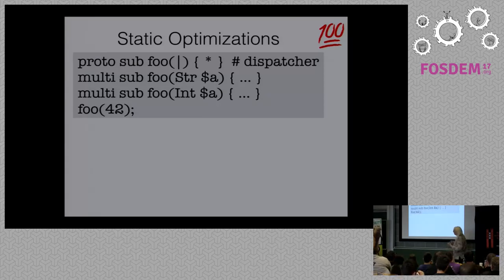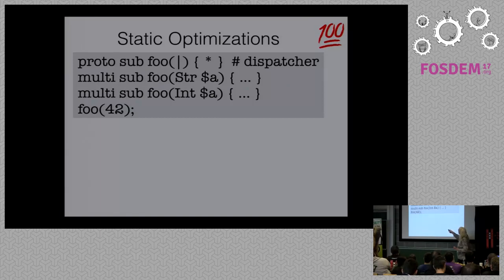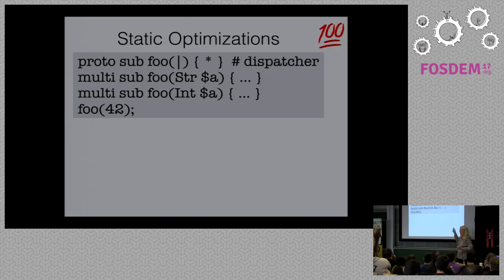Another example of static optimizations that is still very useful: in Perl 6 we have something called multis. So we have a subroutine called foo, and we have a prototype for it — 'proto' — which is actually a dispatcher. Normally you don't have to specify it explicitly; I'm just doing so here so you can actually see that there is such a thing.